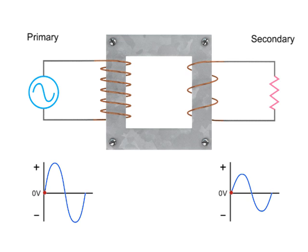The constantly changing current driven by an alternating voltage source induces a changing magnetic field in the core of the transformer.